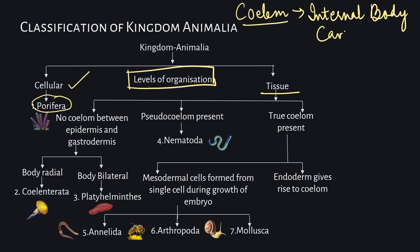There is a concept you need to understand that will help in remembering the classification. When an embryo is formed, it has certain layers of cells. As the embryo grows into a larger and more complex organism, those cells at the embryo level differentiate into other tissue structures and perform their designated functions. In other words, certain cells in the embryo are designated to differentiate further into particular structures.